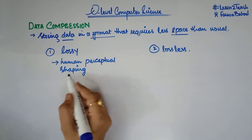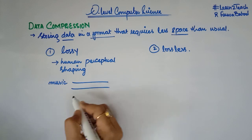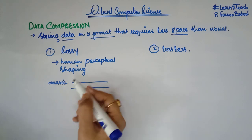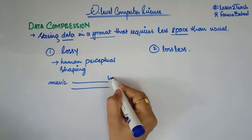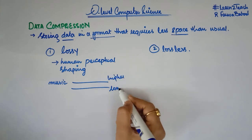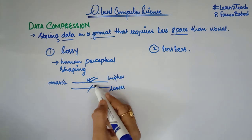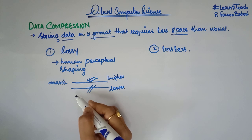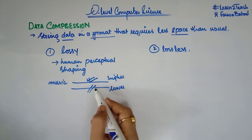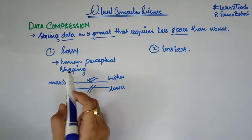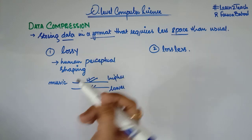For example, let's suppose we have music with two sounds playing at the same time — one is a higher note and one is a lower note. The human ear is going to listen to the higher one. So we can remove that particular part of data, the lower note, that is not being heard by the human. This is the concept of human perceptual shaping.